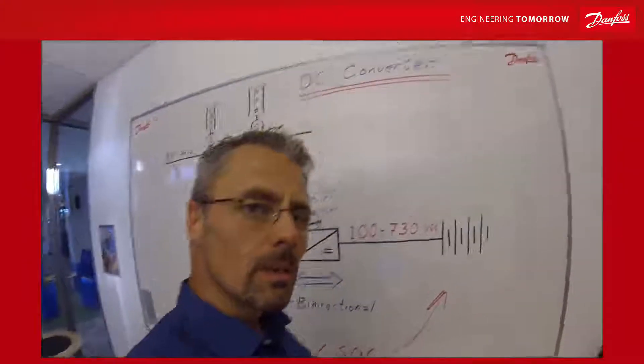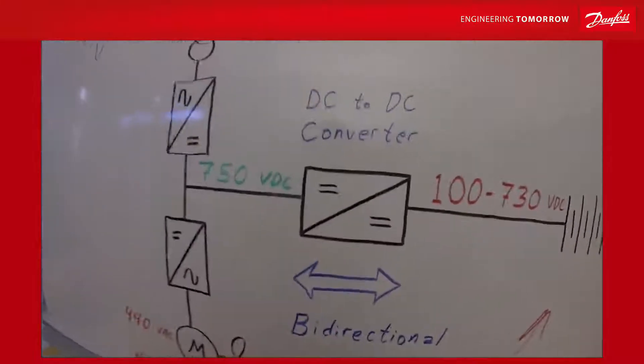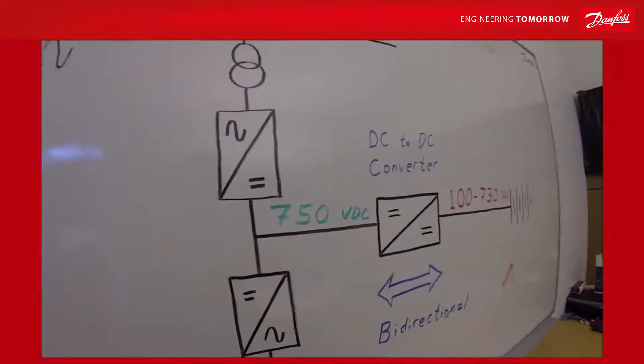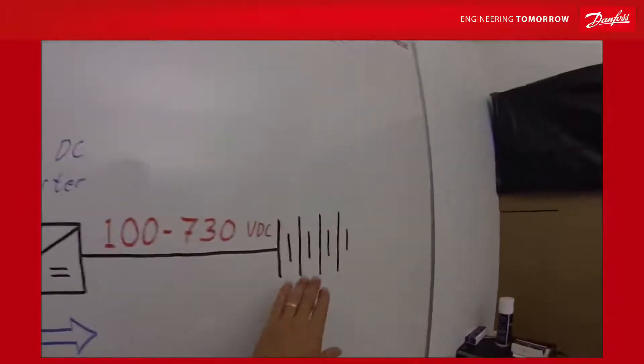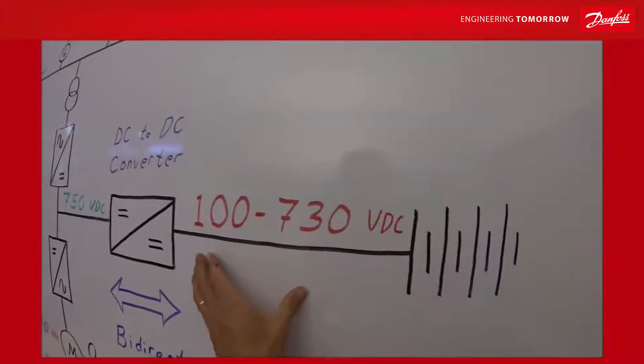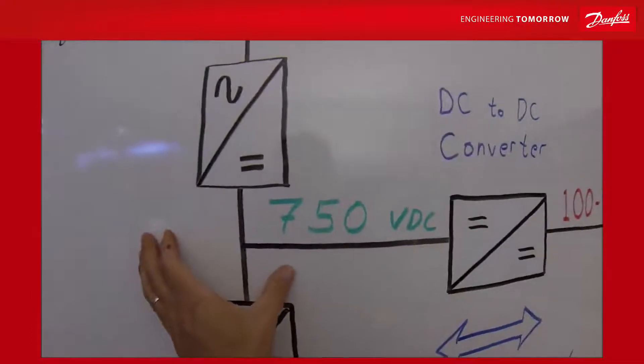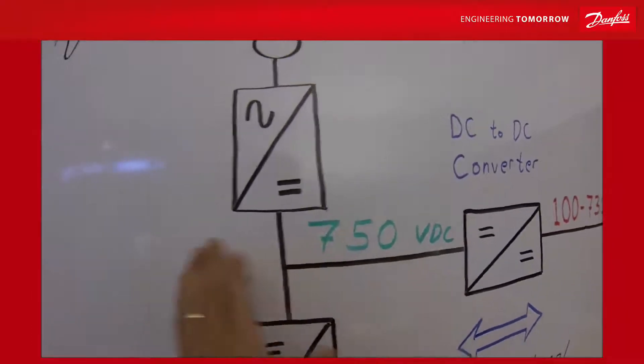The DC to DC converter is a relatively new product from Danfoss Vacon. The DC to DC converter can adapt any energy source that fits into a quite wide voltage window into a common DC bus system with a fixed DC voltage.